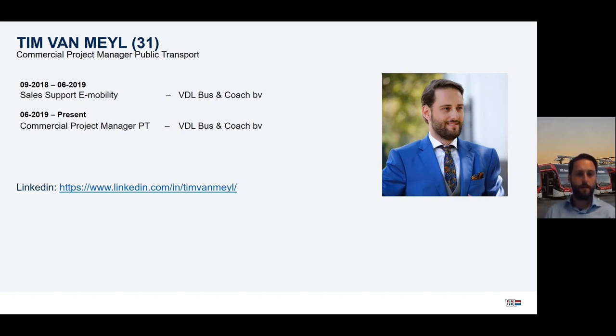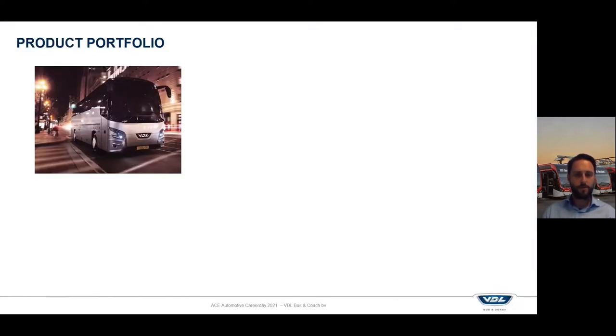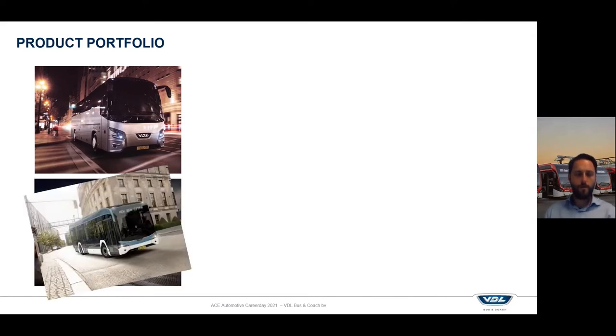VDL itself manufactures buses and coaches. For example, this VDL Futura, but also the new generation CITEA public transport bus that we designed completely from scratch and that will be built in a completely new factory that we are building at this moment in Roeselare in Belgium.